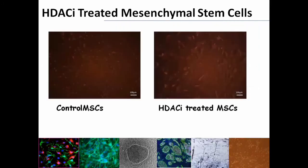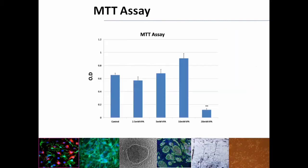After successful characterization of MSCs, we moved to the next step: treatment of mesenchymal stem cells with the optimized dose of HDACI. First, we checked the cytotoxic effect of HDACI on MSCs, using different concentrations from 2.5 to 20 millimolar. We found that 20 millimolar concentration of VPA, the HDACI, causes cell death. Therefore, we selected 5 millimolar VPA concentration for the treatment of MSCs for hepatic differentiation.